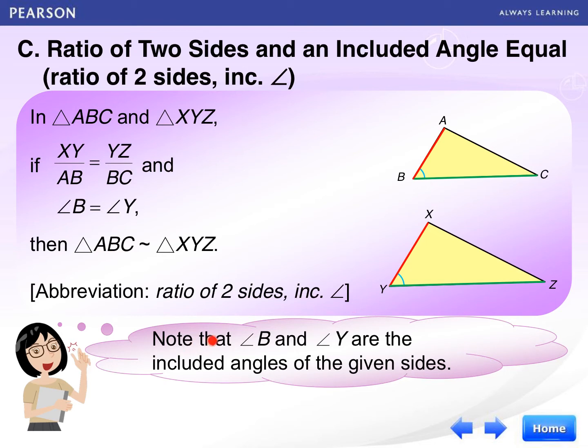And please note that angle B and angle Y are the included angle of the given sides. Angle B, angle Y, included angle.